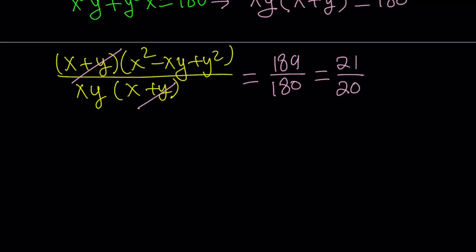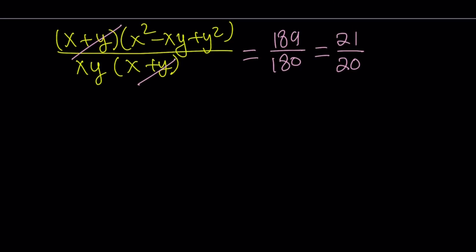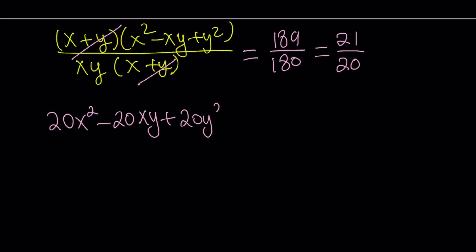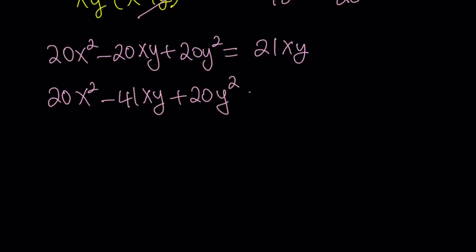This gives us a nicer equation. Cross-multiplying gives us a quadratic in two variables: 20x squared minus 20xy plus 20y squared equals 21xy. Bringing 21xy to the left gives negative 41xy in the middle, and zero on the right-hand side. This is a homogeneous equation — just like with differential equations, when you get something homogeneous, the solution is going to be easier.